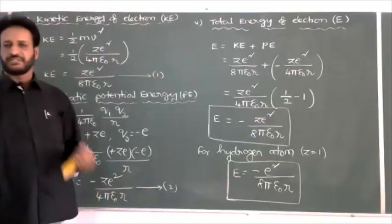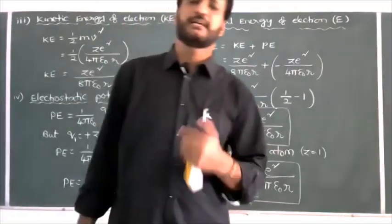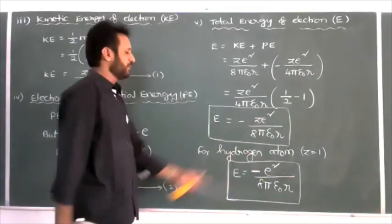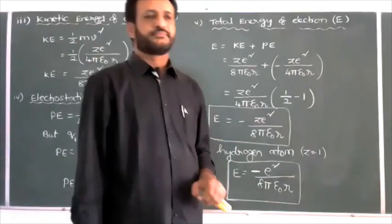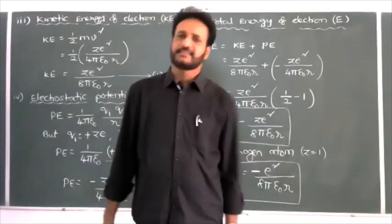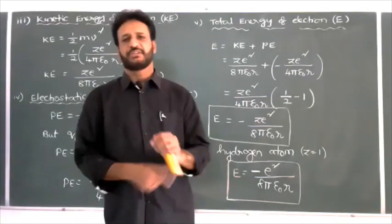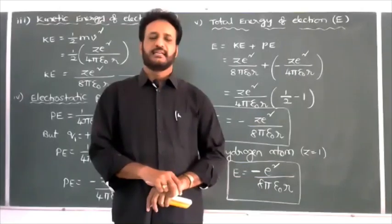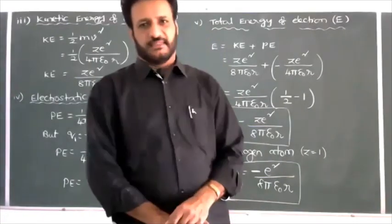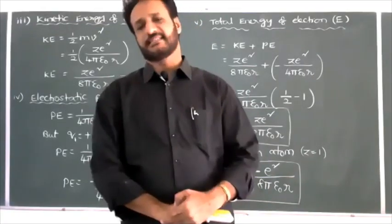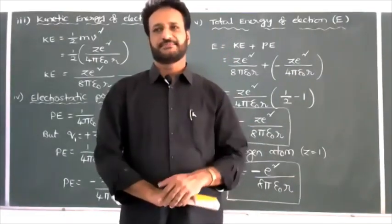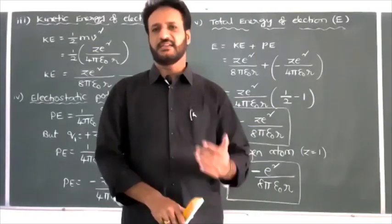So we have derived: kinetic energy, potential energy, radius of the circular orbit, and speed of electron in the given orbit. The negative sign in the total energy expression represents that the electron is bound to the nucleus — meaning the electron is attracted by the nucleus. To remove the electron, some energy has to be supplied.